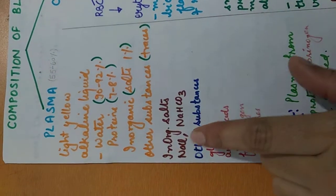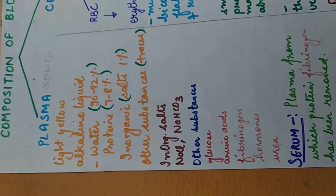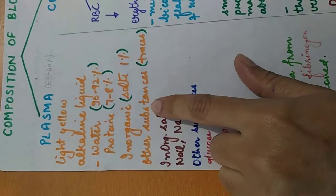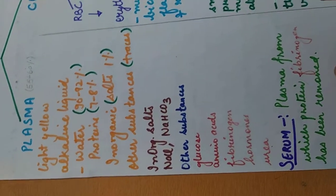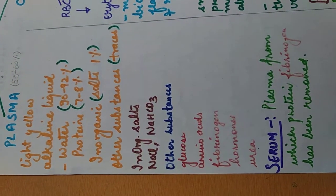These inorganic salts include sodium chloride and sodium bicarbonate, and the other substances include glucose, amino acids, fibrinogen, hormones, and urea.